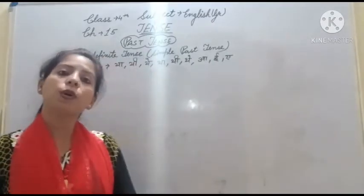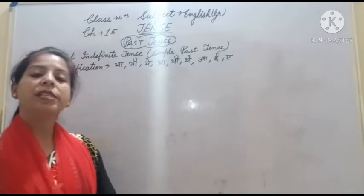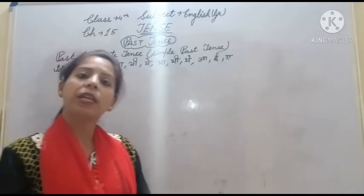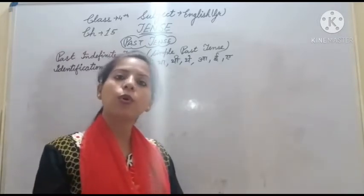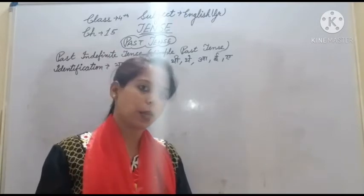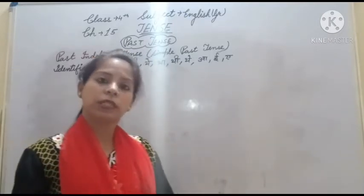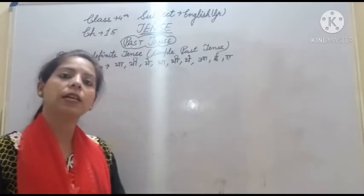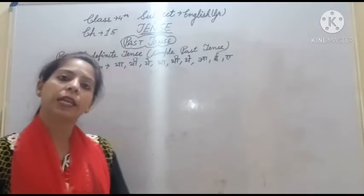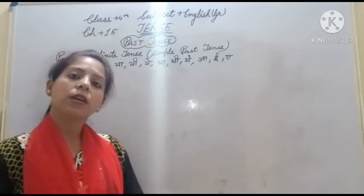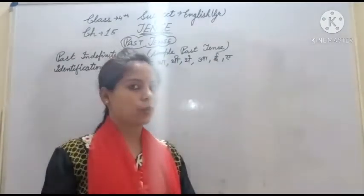इसका affirmative sentence — सकारात्मक वाक्य — जिन वाक्यों में नहीं का प्रयोग नहीं होता और प्रश्न नहीं पूछा जाता, वो होते हैं affirmative sentence। इसका structure: सबसे पहले subject, फिर verb की second form, और last में object, उसके बाद full stop। ठीक है बिटा?